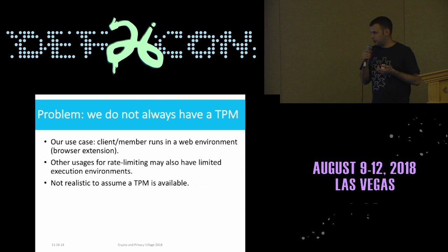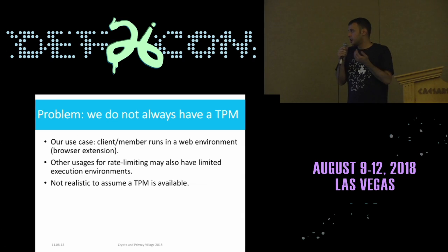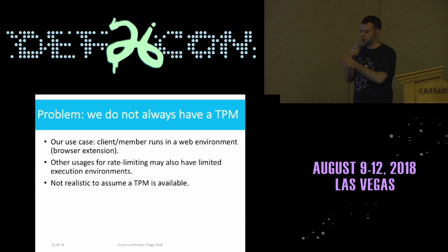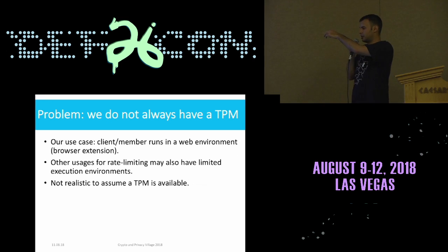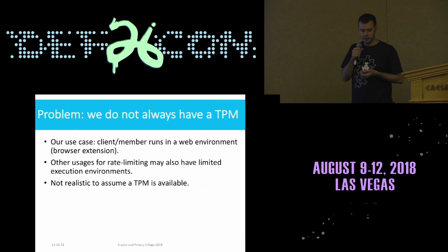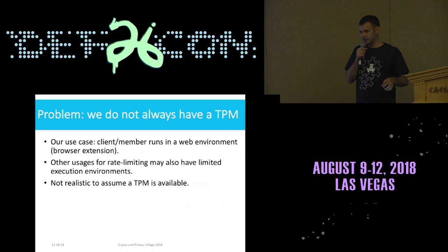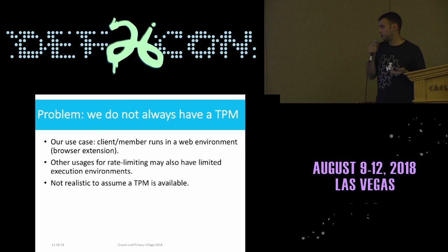Now, if TPM was available in all devices, we could basically end the talk here and say we leverage the TPM because it runs this direct anonymous attestation protocol, and we showed how to use it to rate limit. But in practice, this is not the case. First, TPM is not available in all devices. And even if it's available, in our execution environment — we want to run this rate limiting service in the client, which is a browser extension — even if the TPM might be available physically in the device, we might not be able to access it. So it's not realistic to assume that the TPM is available.